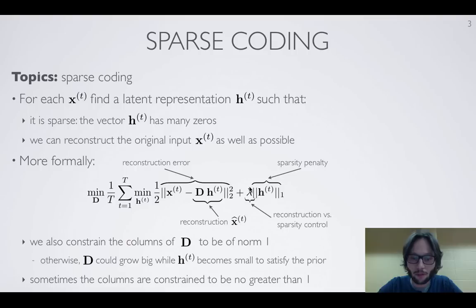This lambda term here is going to control to what extent we wish to get a good reconstruction error compared to achieving high sparsity. These two objectives sort of fight each other. The sparsity term would be very happy if all the h(t) vector was only zeros. However, the reconstruction would be very bad.